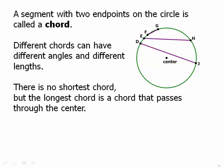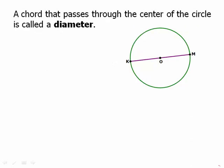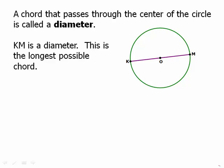There is no shortest chord. The chords can be anything down to zero, but the longest chord is a chord that passes through the center. A chord that passes through the center of the circle is called the diameter. So a diameter is a chord. In fact, it is the maximum length chord, the longest possible chord.